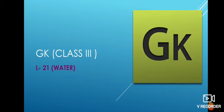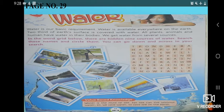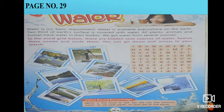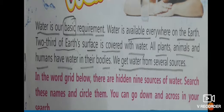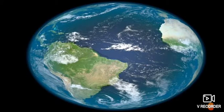The next chapter is lesson number 21, Water. It is on page number 29, so open this page. Let's start with the introduction part first. Underline this paragraph as it is very important. Water is our basic requirement — it is the biggest need of our life, and water is available everywhere on the earth.